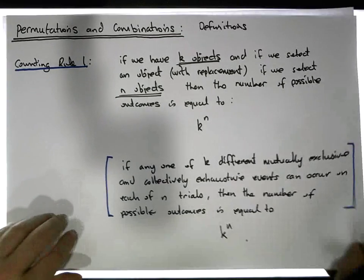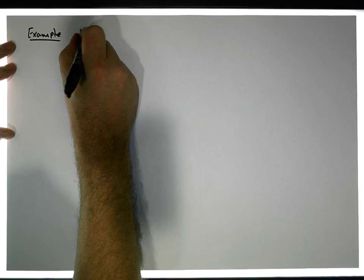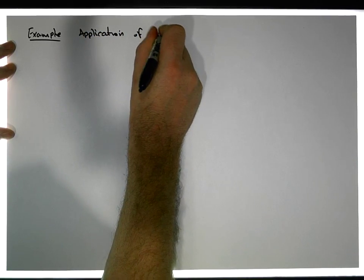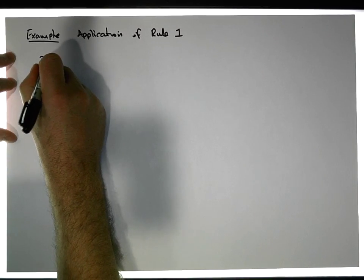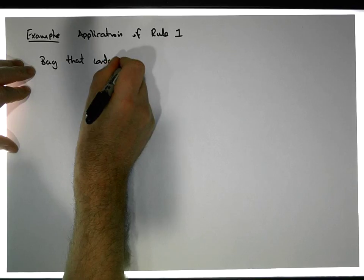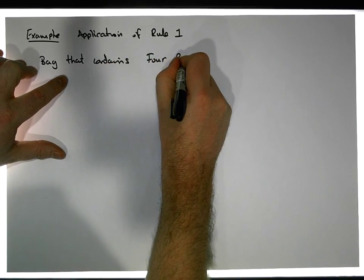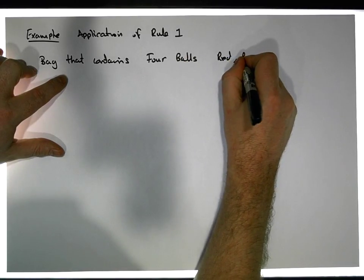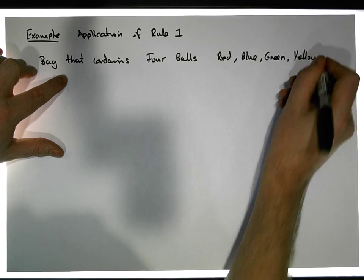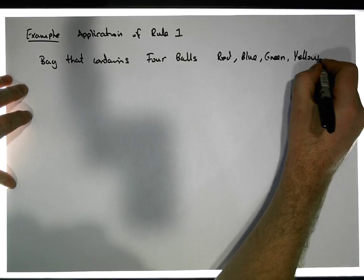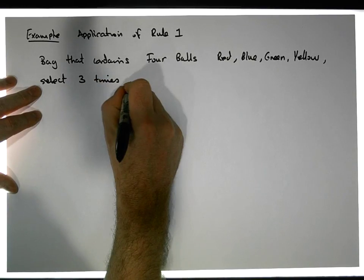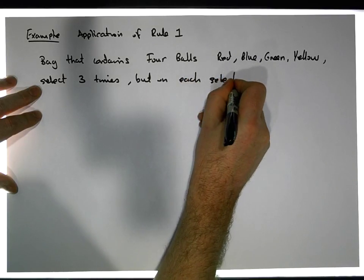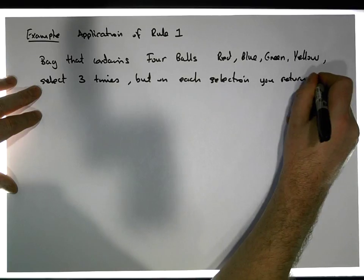Let's look at a quick example — an application of Rule Number One. Say we have a bag that contains four balls: red, blue, green, and yellow. The question is: if you select from the bag three times, and on each selection you return the selected ball back into the bag, how many possible outcomes are there?